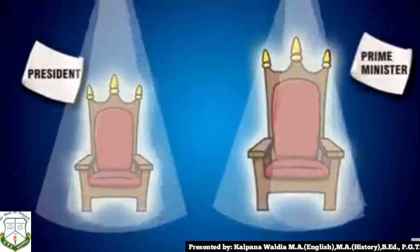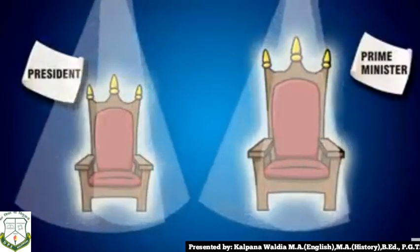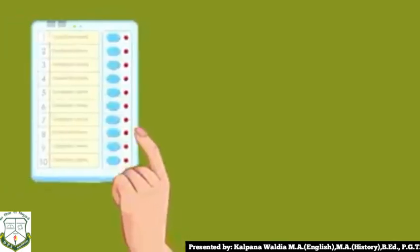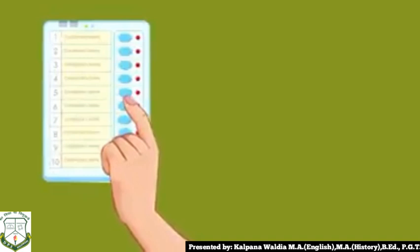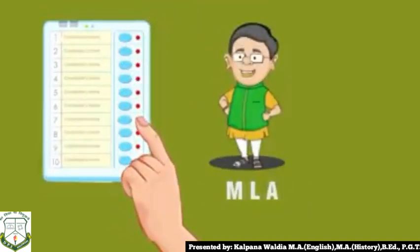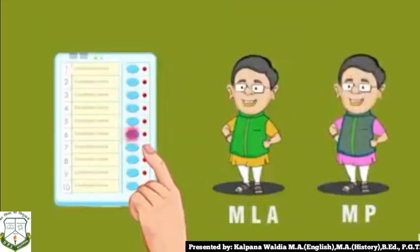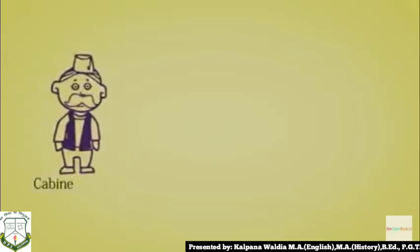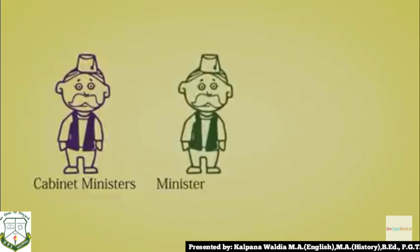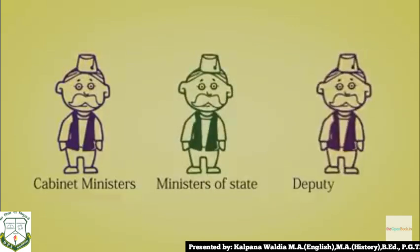The President, the Prime Minister, and his council of ministers and civil servants form the executive. The political executives consist of political leaders elected by the people, who act on their behalf and are responsible to the public who elected them. They take all the decisions and act accordingly. The Prime Minister has three kinds of ministers who help him: cabinet ministers, ministers of state, and deputy ministers.